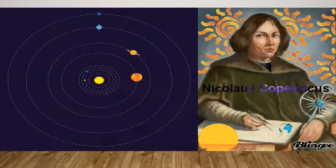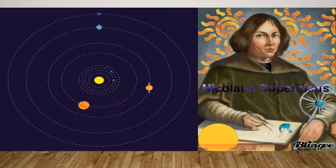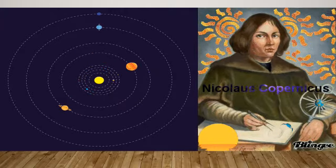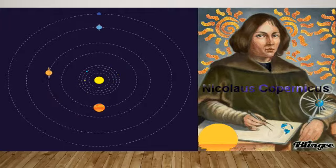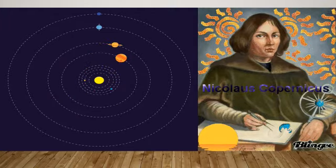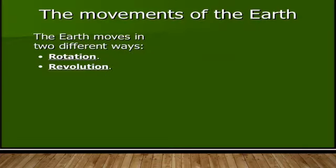Nicolaus Copernicus said that Earth is not stationary and it is also not the center of the universe. According to him, the Earth has two types of movement.